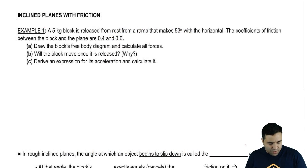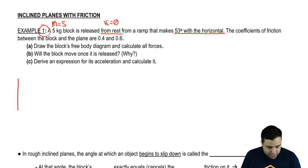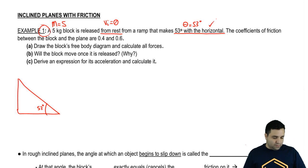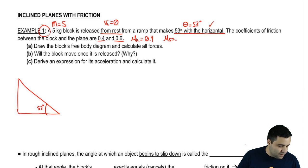There's really nothing special here other than putting those two ideas together, so we're going to start with an example right away. We have a 5 kilogram object here, so the mass is 5. It is released from rest, so the initial velocity is 0, from a ramp that makes an angle of 53 degrees with the horizontal. The coefficients of friction are 0.4 and 0.6. Remember, 0.4 is my kinetic, always the smaller one when you're given two, and 0.6 is the static.